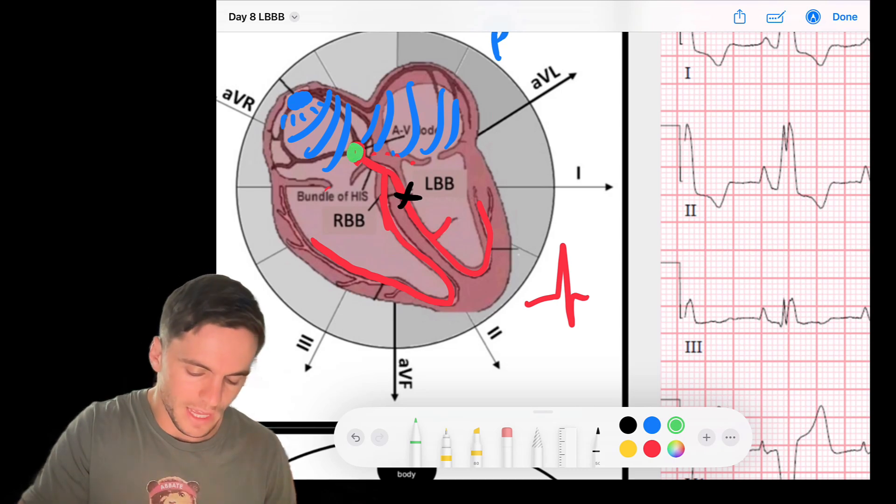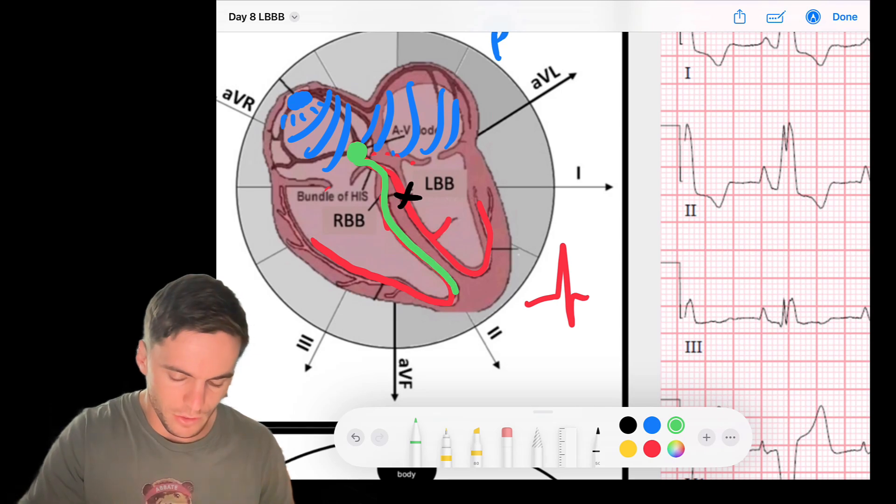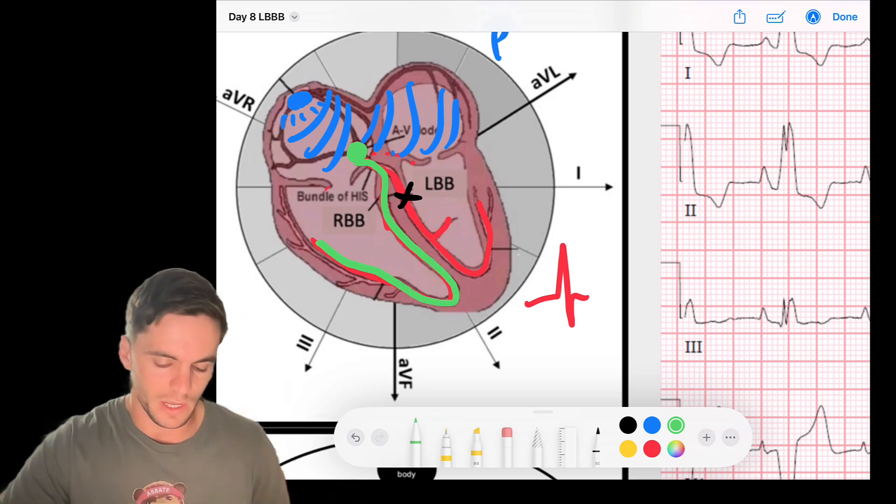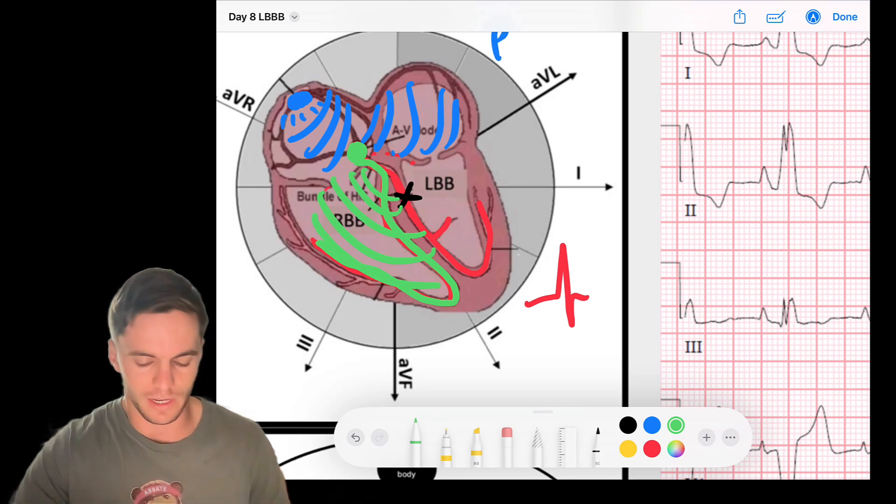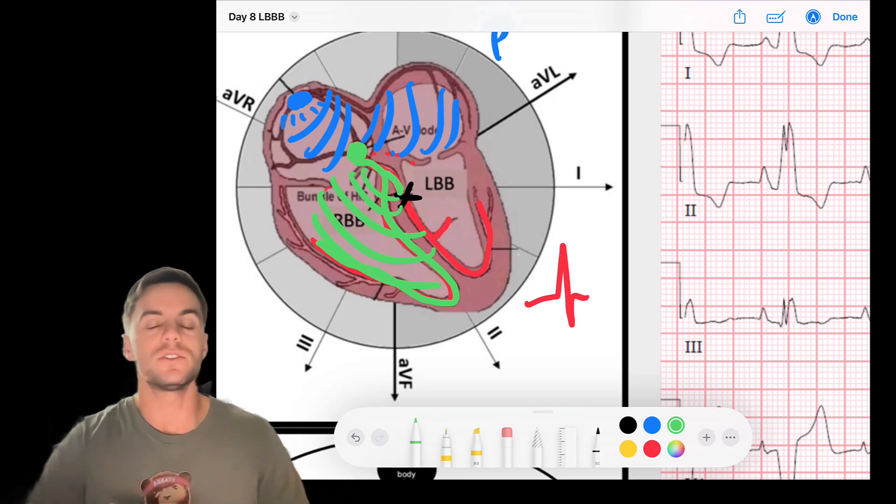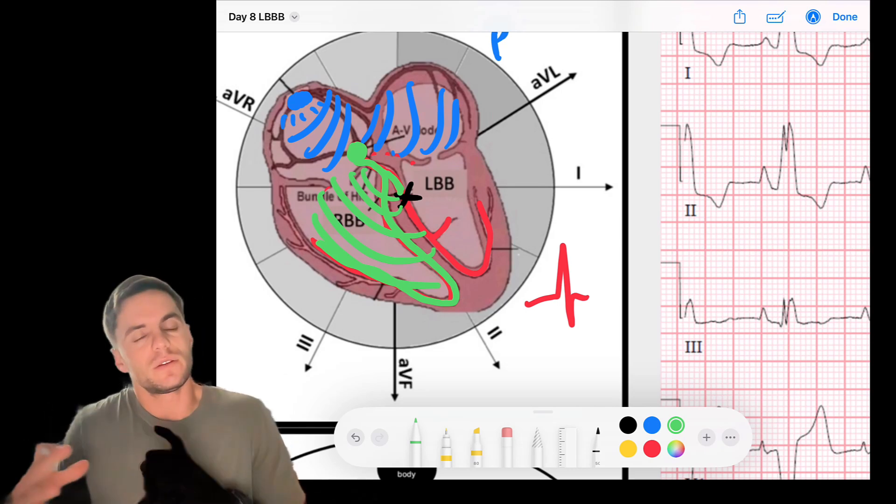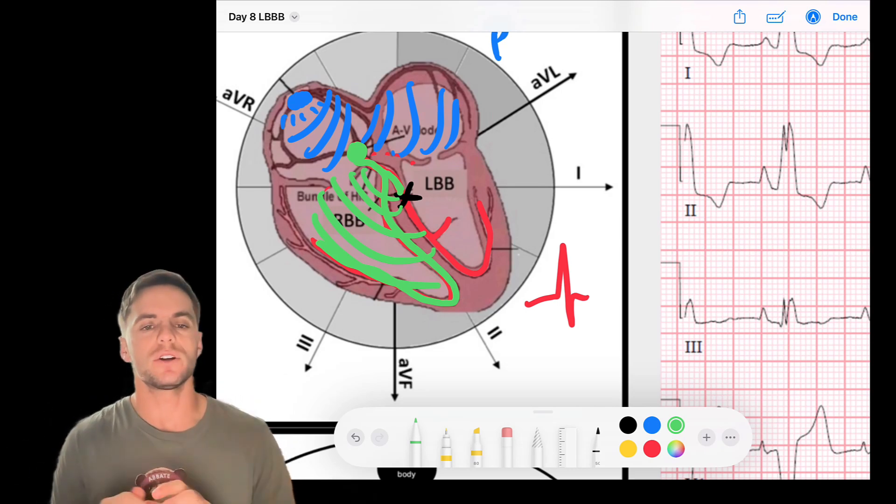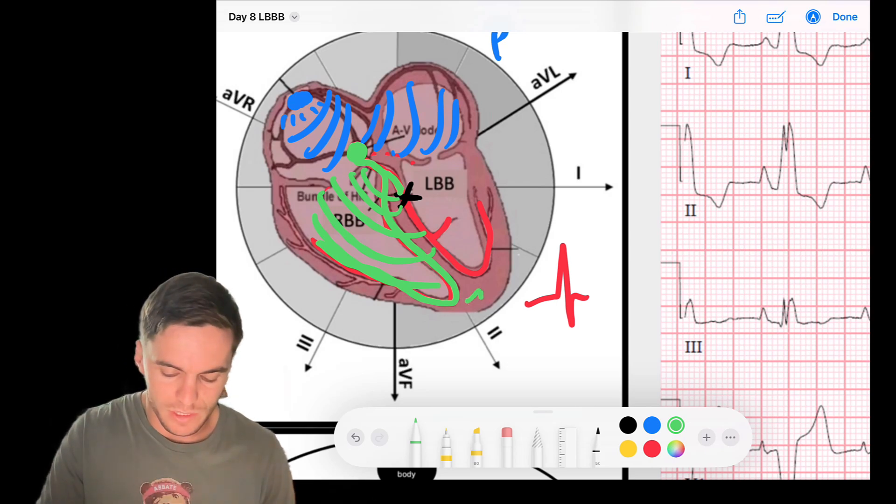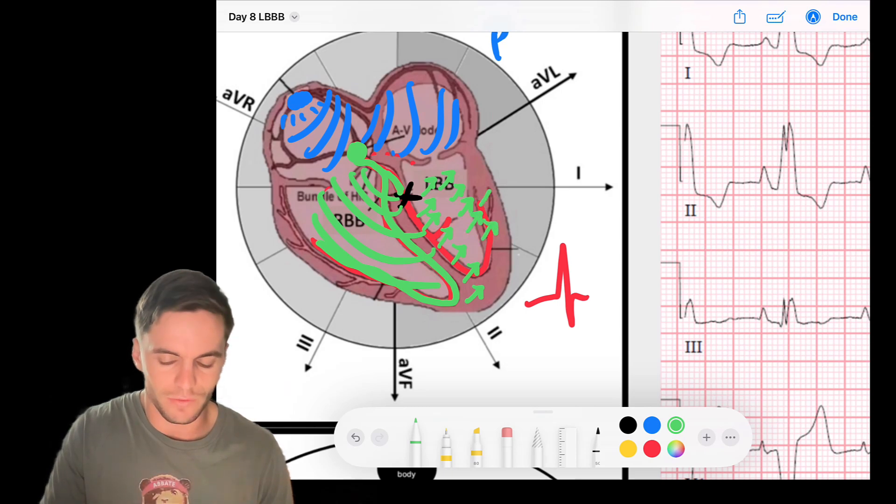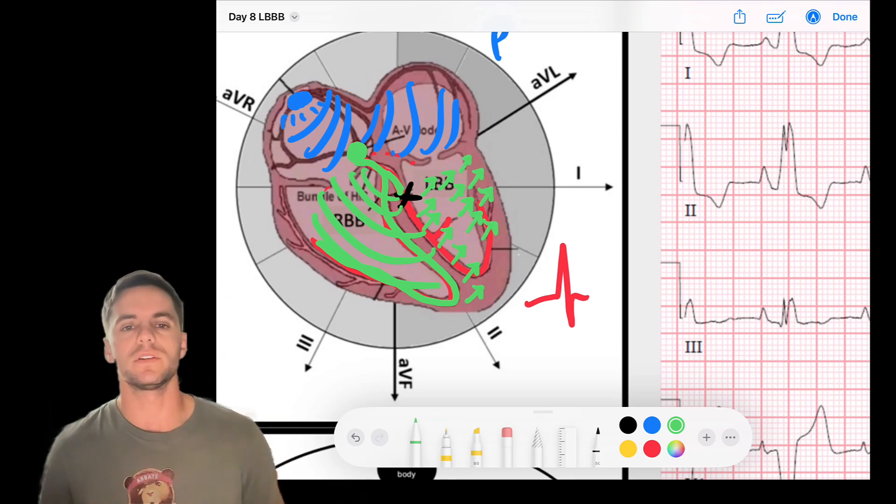So the signal, when it comes down the AV node, comes down the bundle of His, it can freely pass through the right bundle and rapidly depolarize the right side. But when it attempts to go down to the left, it gets blocked. And so what ends up happening is the left ventricle, or the areas that the left bundle supplies, are unable to get signal. The signal travels there from cell to cell gap junction, which is a very slow process, as that signal from the right side in a delayed fashion has to travel all the way across the left ventricle.